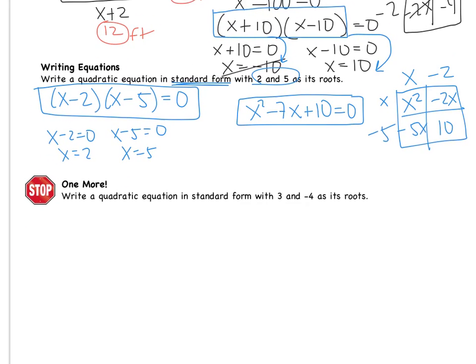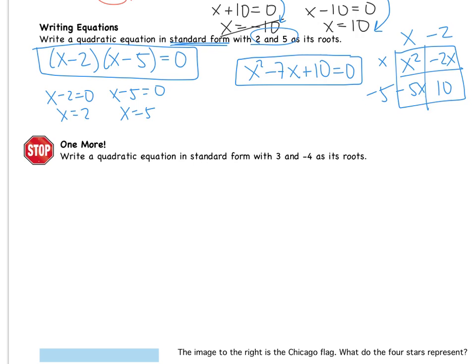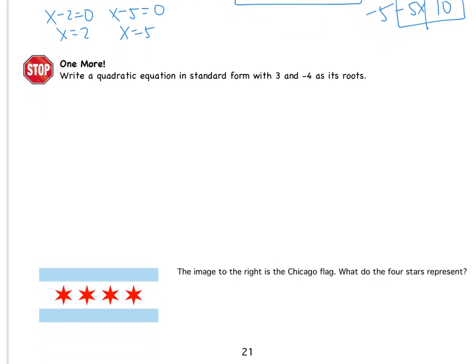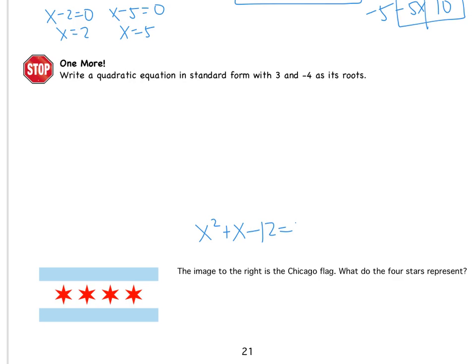Okay, you have one more to do on your own. This is for you to do. Pause the video and try this one on your own, please. Come back when you are finished. Okay, let's see how we did. You should have gotten x squared plus x minus 12 equals 0. If you didn't, then you made a mistake somewhere. You need to make sure that you have all of the work and the correct answer when you come to class tomorrow.